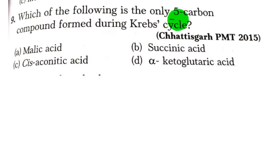Which of the following is the only 5 carbon compound formed during the Krebs cycle? Now Krebs cycle is a part of aerobic cellular respiration. These are the 4 options that we are given. And the correct option is option D, alpha-ketoglutaric acid.